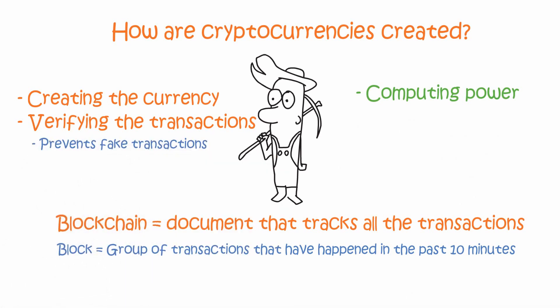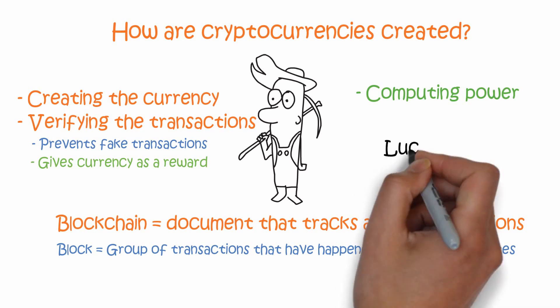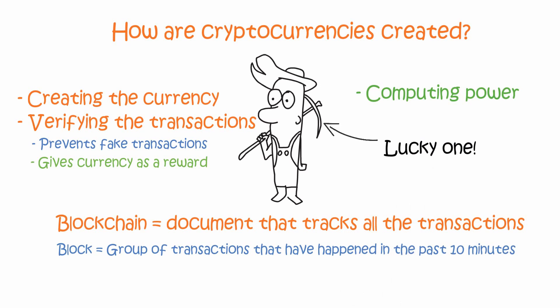But why would anyone waste their computing power to verify these blocks? Well, verifying these blocks can give you currency like bitcoins as a reward. For example, one block contains 12 and a half bitcoins, and every 10 minutes those bitcoins are given to the lucky miner — the first one whose computer guessed the right 64-digit number when verifying the block. I'll talk more about the blockchain in a future video, so that is all about it for now.